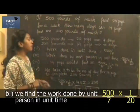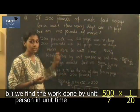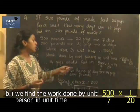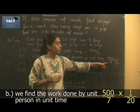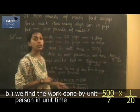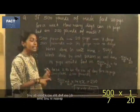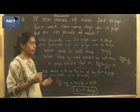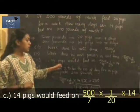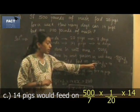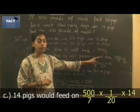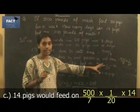Next, we find out work done by unit person, that is pig in this particular question, in unit time. 500 by 7 is already the unit time. Dividing it by 20 gives you the amount of mush eaten by one pig in one day. Therefore, 14 pigs would feed on 500 divided by 7 multiplied by 1 by 20 multiplied by 14 pounds of mush for one day.